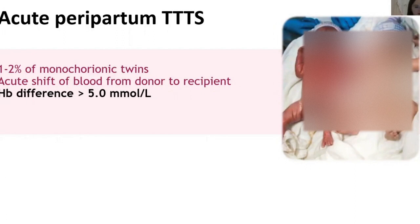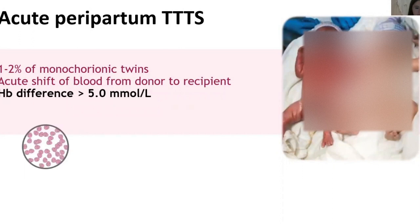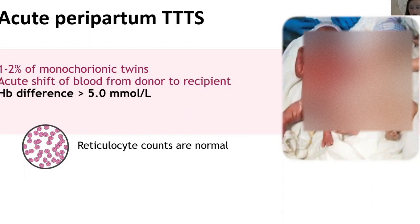These twins are also pale and red, and they have a very high hemoglobin difference, so it is easily mistaken with TAPS. That is why it is important to look at reticulocyte counts: in acute TTTS it happens very quickly, and both babies have not been able to adapt their reticulocyte count based on their anemia or polycythemia, so reticulocyte counts are normal and the reticulocyte count ratio is around 1.